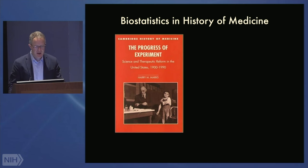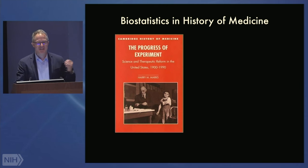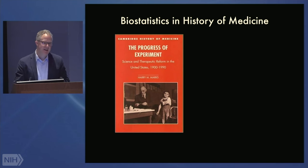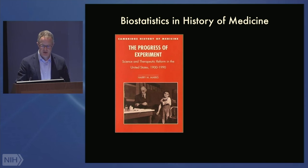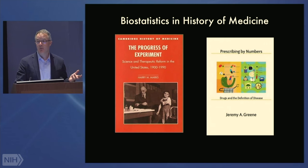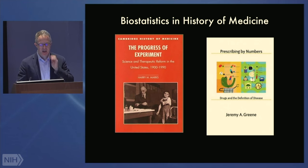The reasons for this transformation have already been traced by a number of historians. Harry Marks famously argued in The Progress of Experiment that for physicians and physician researchers, the statisticians served as a kind of update of the biochemist — whereas in the late 19th century medical researchers turned to the biochemist for authority, in the mid-20th century they turned to statistics for the same authority, status, and rigor. A historian like Jeremy Green has noted the transformation in thinking about the definition of disease — for example, when you define a normal range of cholesterol, that changes how we think about disease and treatment.